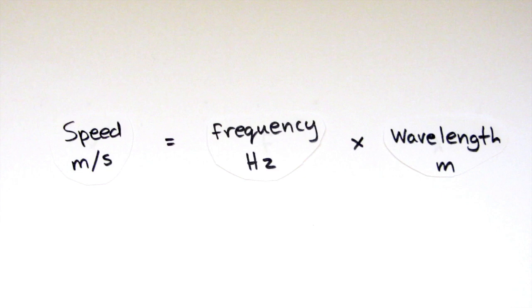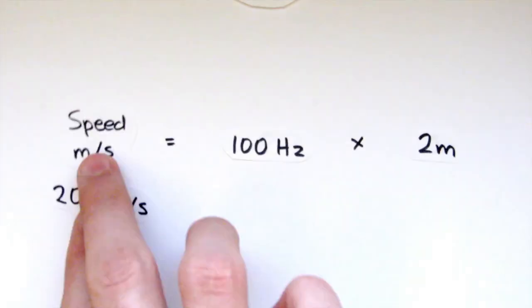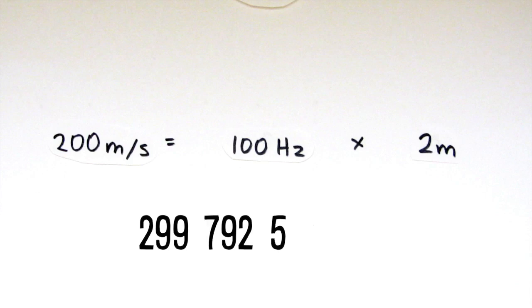For example, a wave with a frequency of 100 hertz and a wavelength of 2 meters travels at 200 meters per second. But that's nothing compared to light's 299,792,558 meters per second.